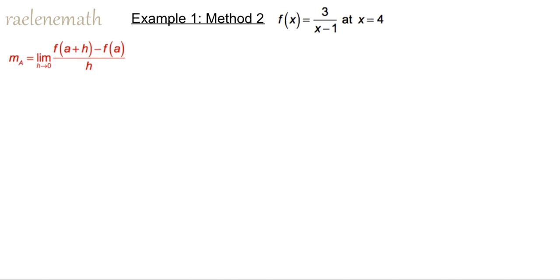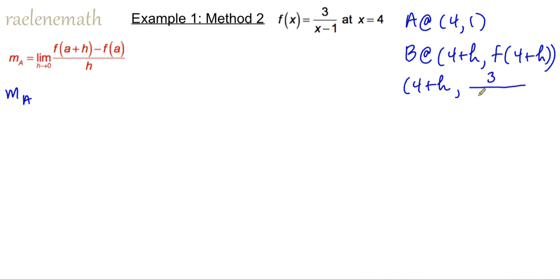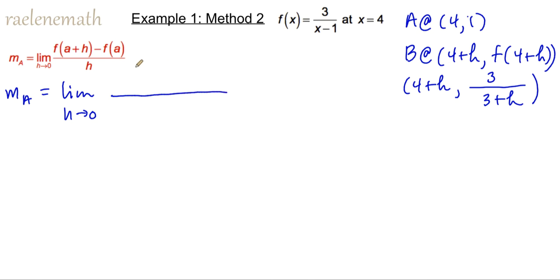Let's take another look using the second method. We're going to calculate the slope at point A again, but in this case our second point has a new name. The second point is going to have an x-coordinate of A plus H — so that's going to be 4 plus H — and the y-coordinate is going to be the x-coordinate substituted into the function: F of 4 plus H. So point B is located at 4 plus H, and the y-coordinate is 3 over 4 plus H minus 1, which is 3 over 3 plus H. We use that to substitute into the big concept: the limit as H approaches 0 of y2 minus y1 over x2 minus x1.